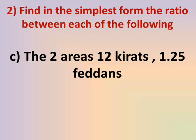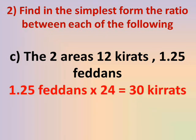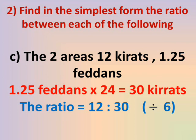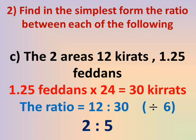So the ratio is 2 to 1. Number C: 12 kirats and 1.25 feddans. We convert from the larger unit to the smaller — from feddans to kirats. 1.25 × 24 = 30 kirats, since 1 feddan = 24 kirats. The ratio is 12 kirats to 30 kirats. Both 12 and 30 are divisible by 6: 12 ÷ 6 = 2 and 30 ÷ 6 = 5.